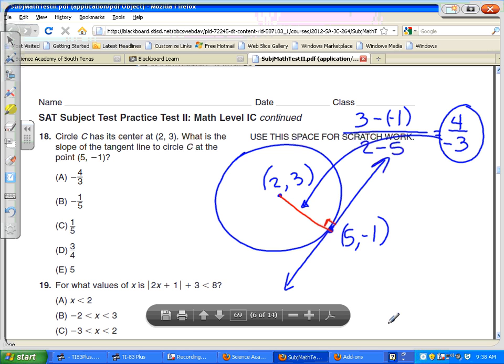What we're interested in is finding the slope of the tangent line, and the slope of the tangent line would be the negative reciprocal. So what is the negative reciprocal of negative 4 thirds? It would be positive 3 fourths. So for this one, the answer should be positive 3 fourths.